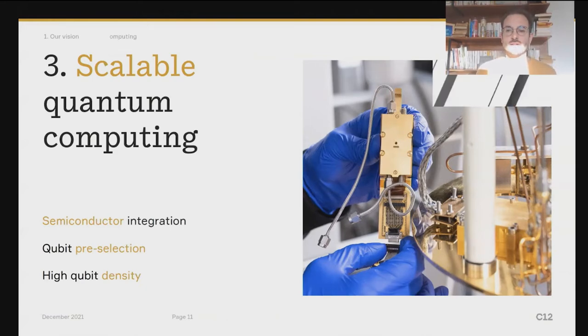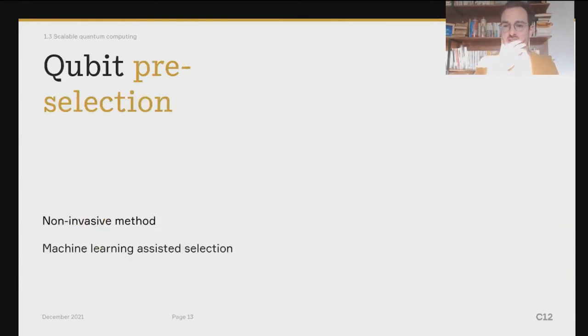So semiconductor integration is the result of our unique patented nano-assembly process. Using this process, we can integrate ultra-pure carbon nanotubes on a chip. And we can do this in a very scalable way. We can integrate like a thousand carbon nanotubes per hour.